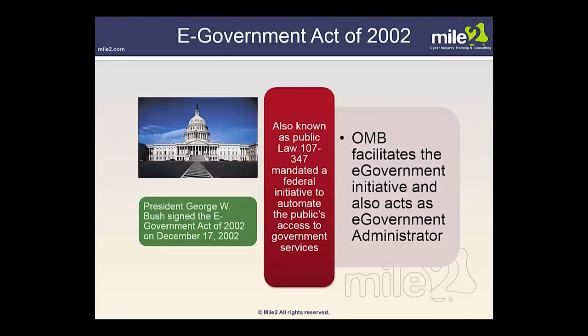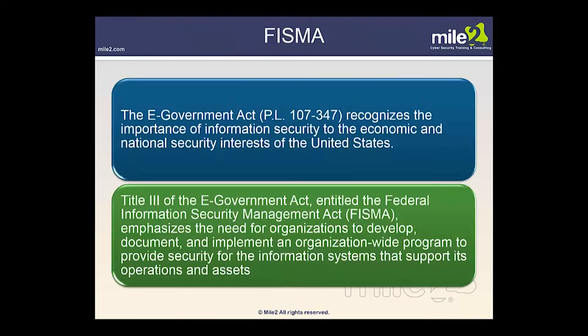A core foundation of information security is based on the E-Government Act of 2002, which mandated the protection of information systems and required yearly annual reporting by each agency head to Congress on the status of information system security. President George W. Bush signed this act on December 17, 2002 — also known as Public Law 107-347 — mandating a federal initiative to automate public access to government services. The OMB facilitates the E-Government initiative and acts as E-Government Administrator.